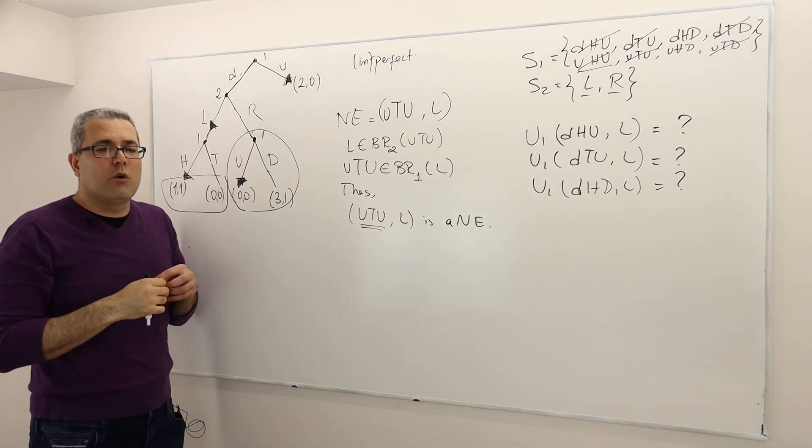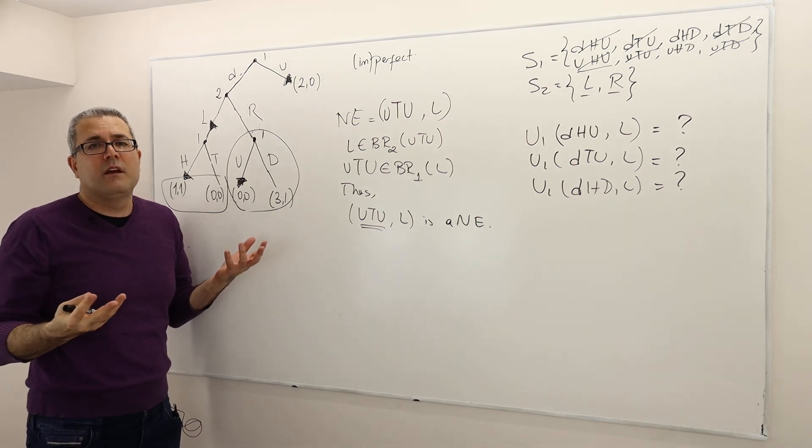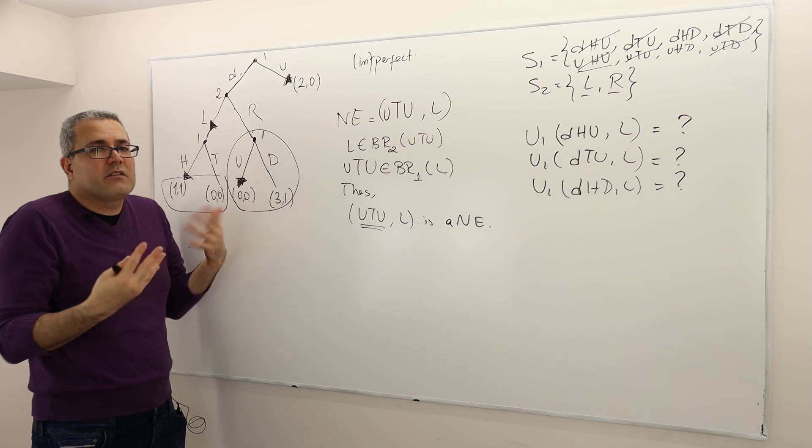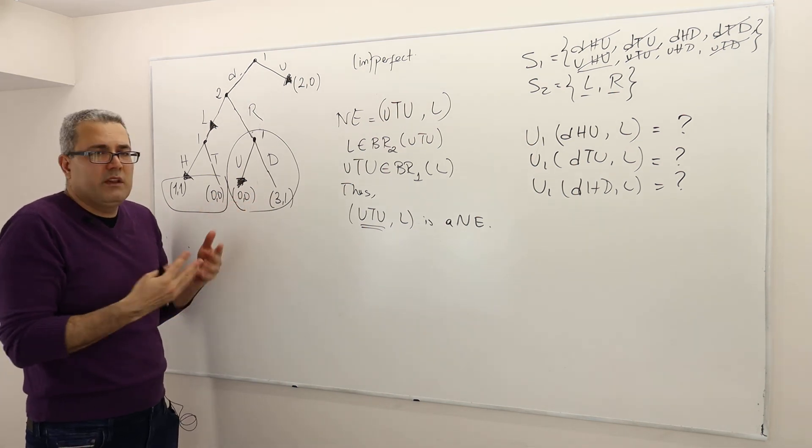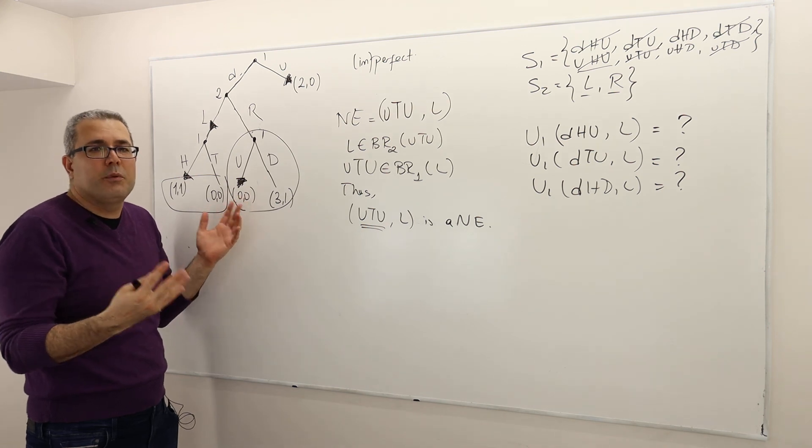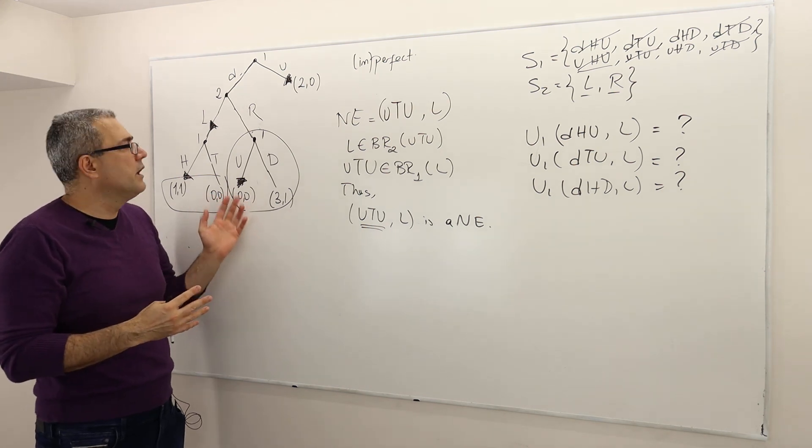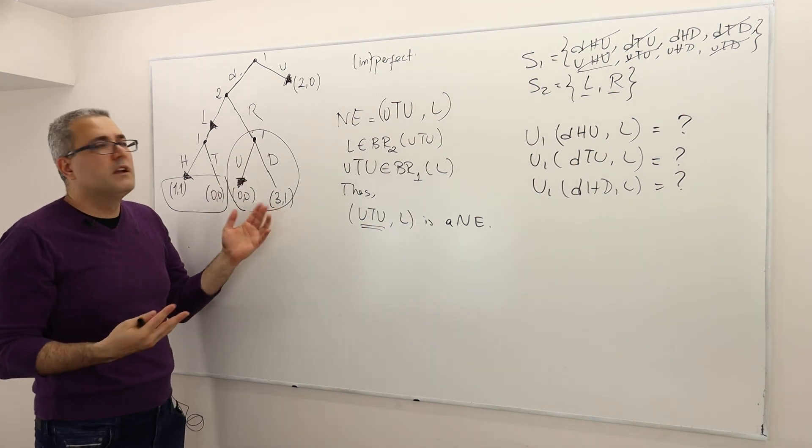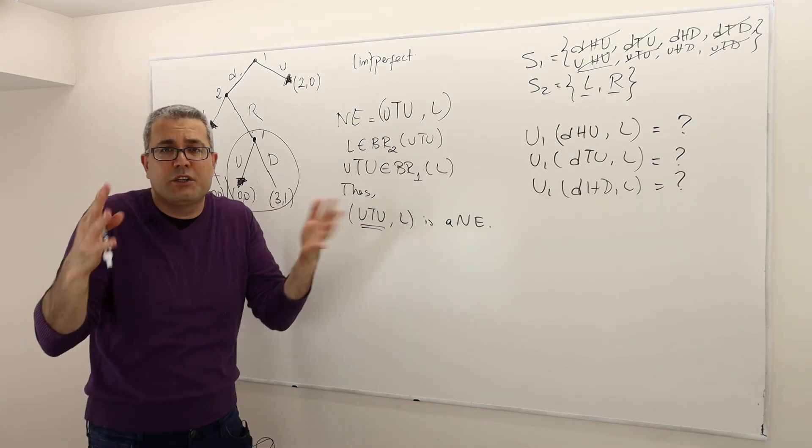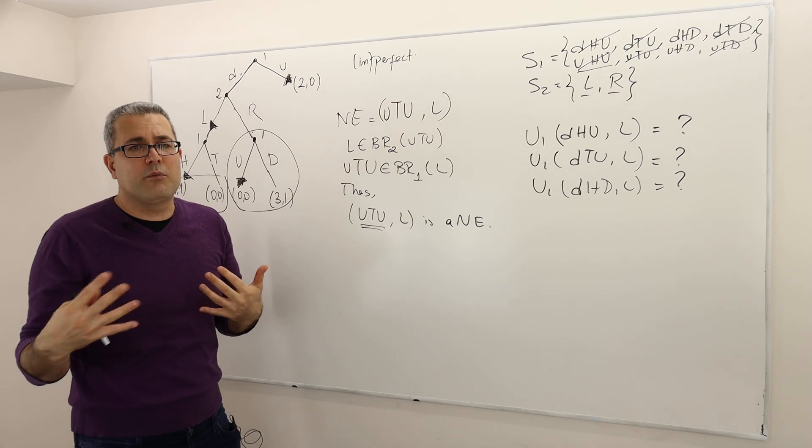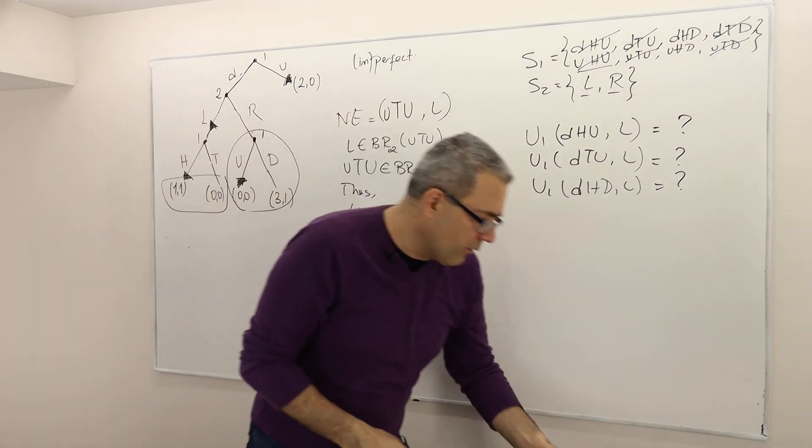So this is kind of what we call a non-credible threat. He's actually threatening the other guy by playing U here. But in fact, he will never play U. I mean, if he's not stupid or something, he will never play U here. He will definitely go for D. So therefore, this UTU is a Nash equilibrium, but it's not really subgame perfect Nash. Okay.